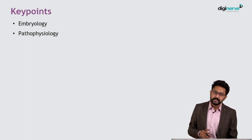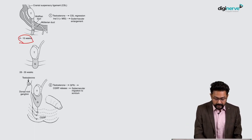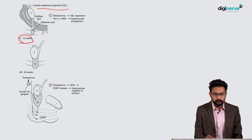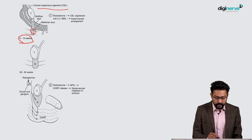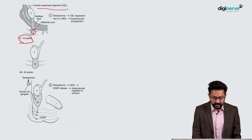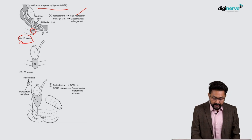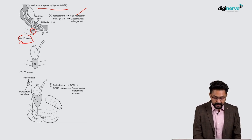Around 8 to 15 weeks, which is the abdominal phase, there are two ligaments that hold the testis. The upper ligament is the cranial suspensory ligament and the lower one is the gubernaculum. Testosterone secreted by the testis intra-abdominally causes regression of the cranial suspensory ligament, while Leydig cell insulin-like factor INSL3 along with Müllerian inhibiting substance causes gubernacular enlargement.